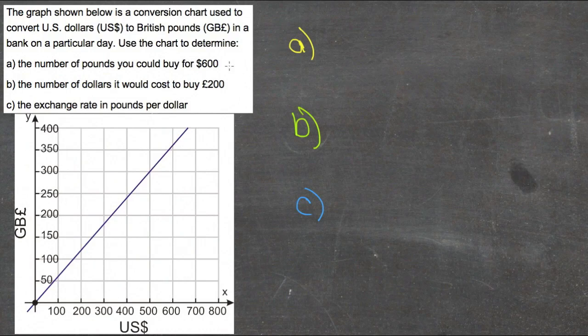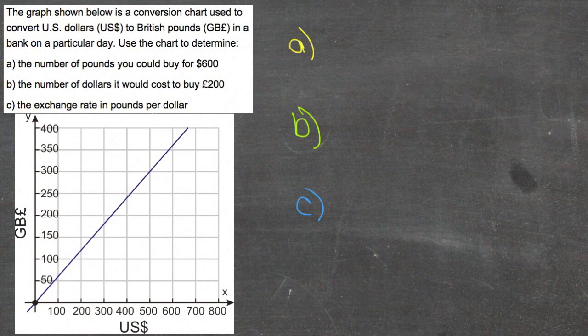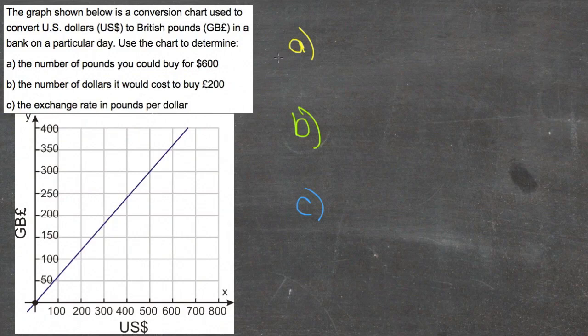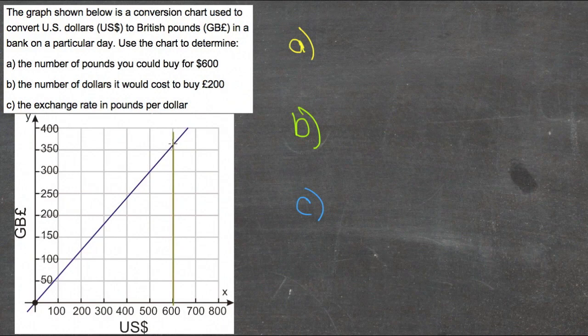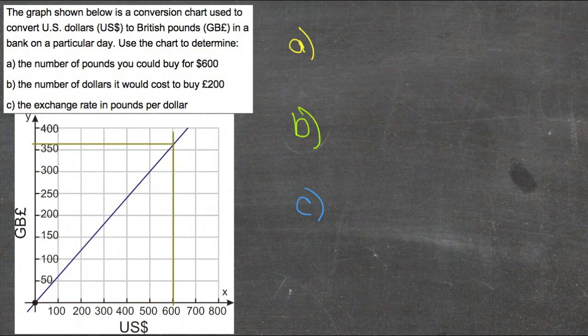So starting with A, all we have to do to solve this one is look on the graph. We can see that the number of pounds we could buy for $600 would be listed right here by going across to $600, and then just going up to see where we intersect, and it looks like that intersects at about 360 pounds.